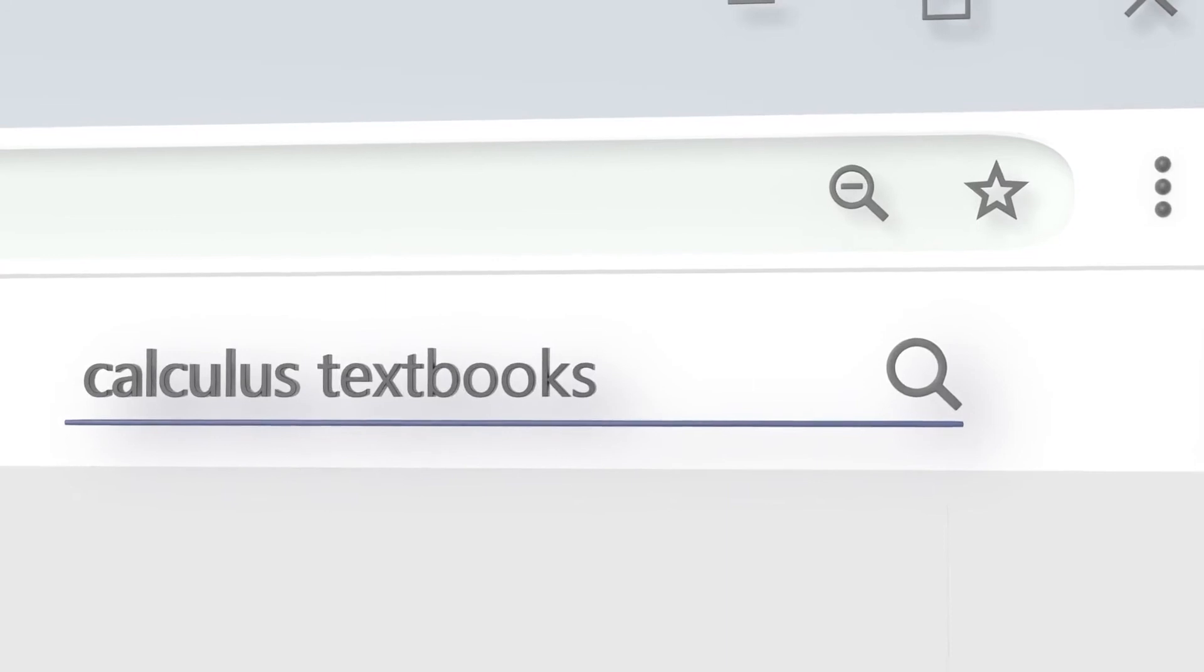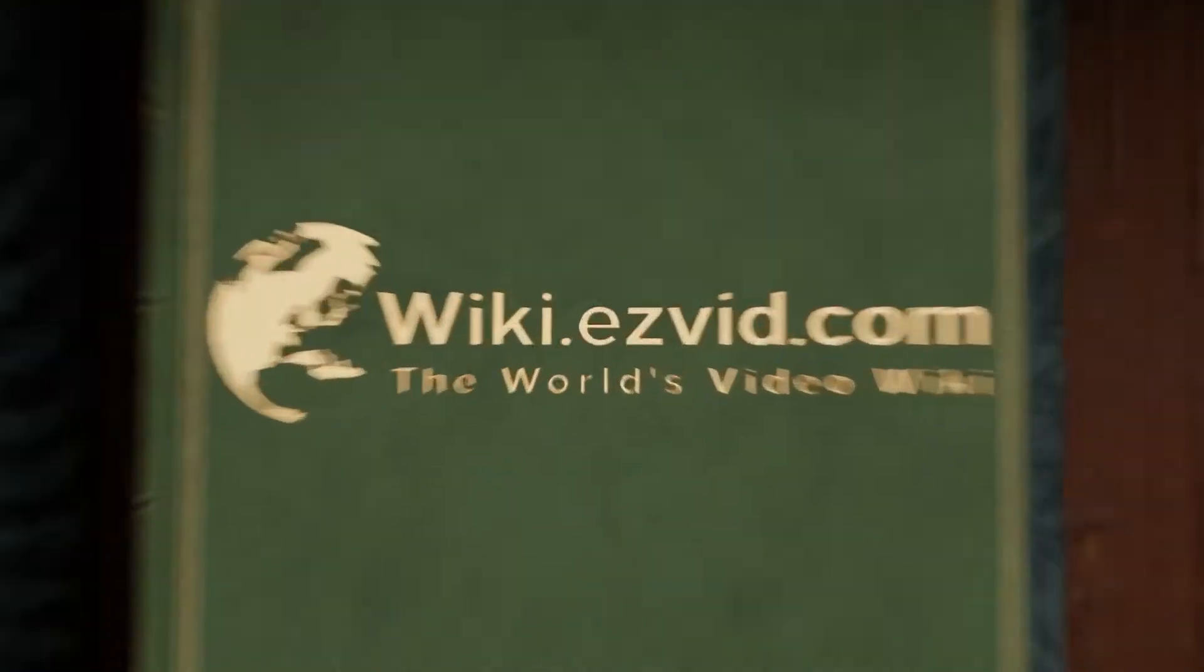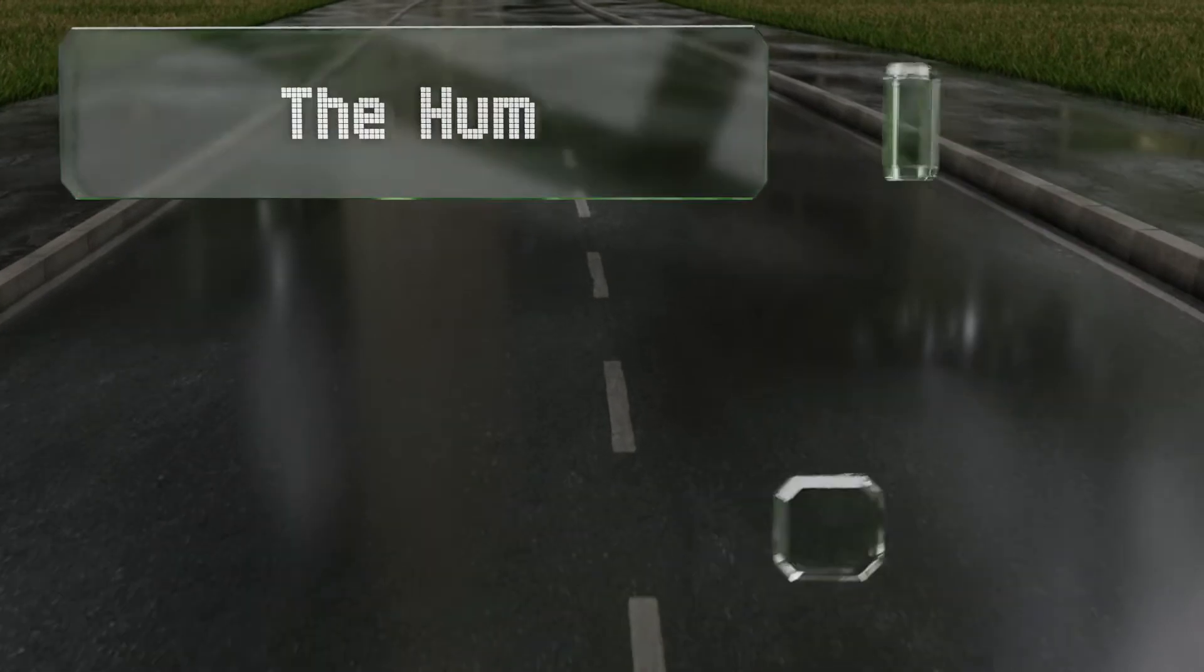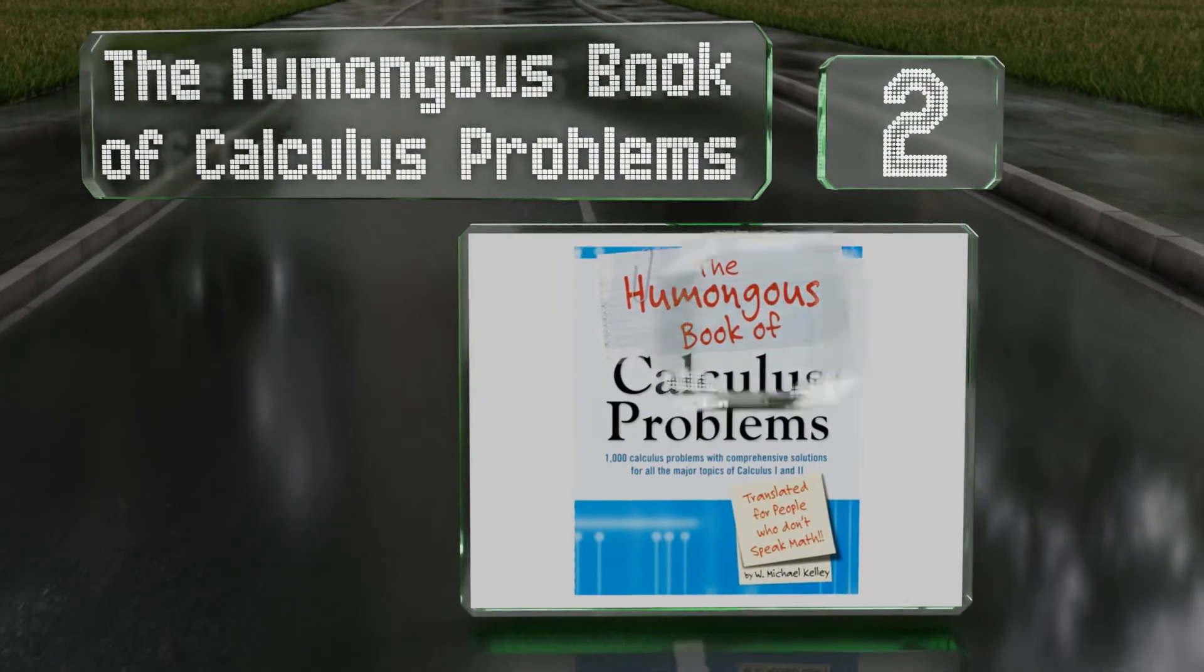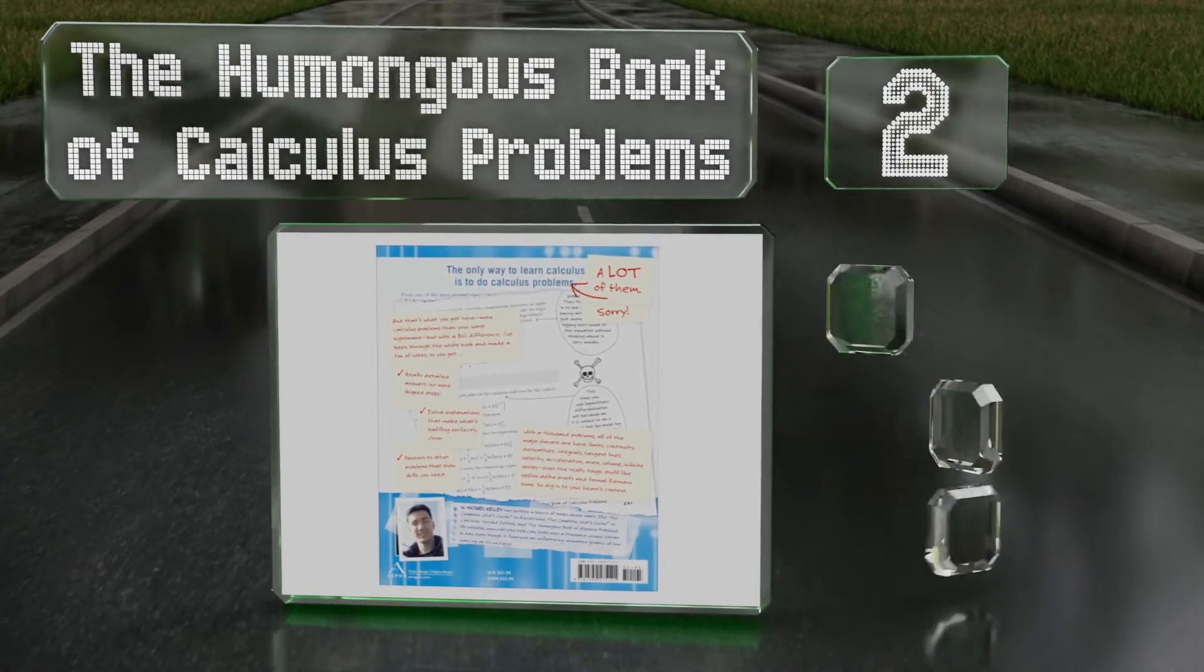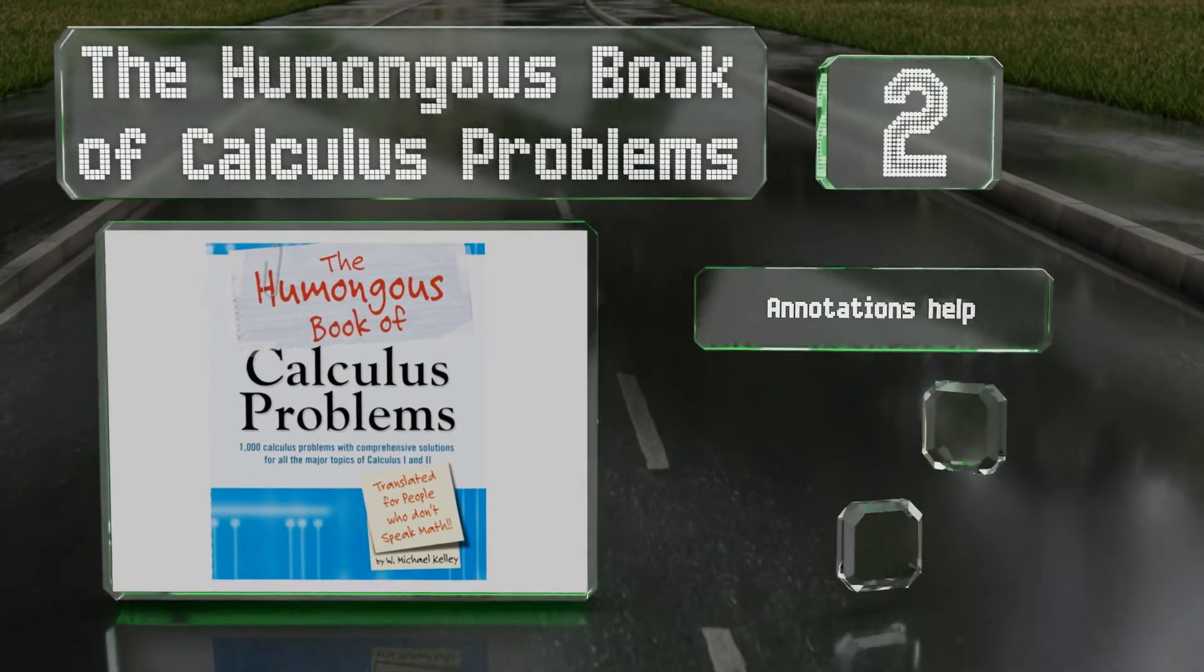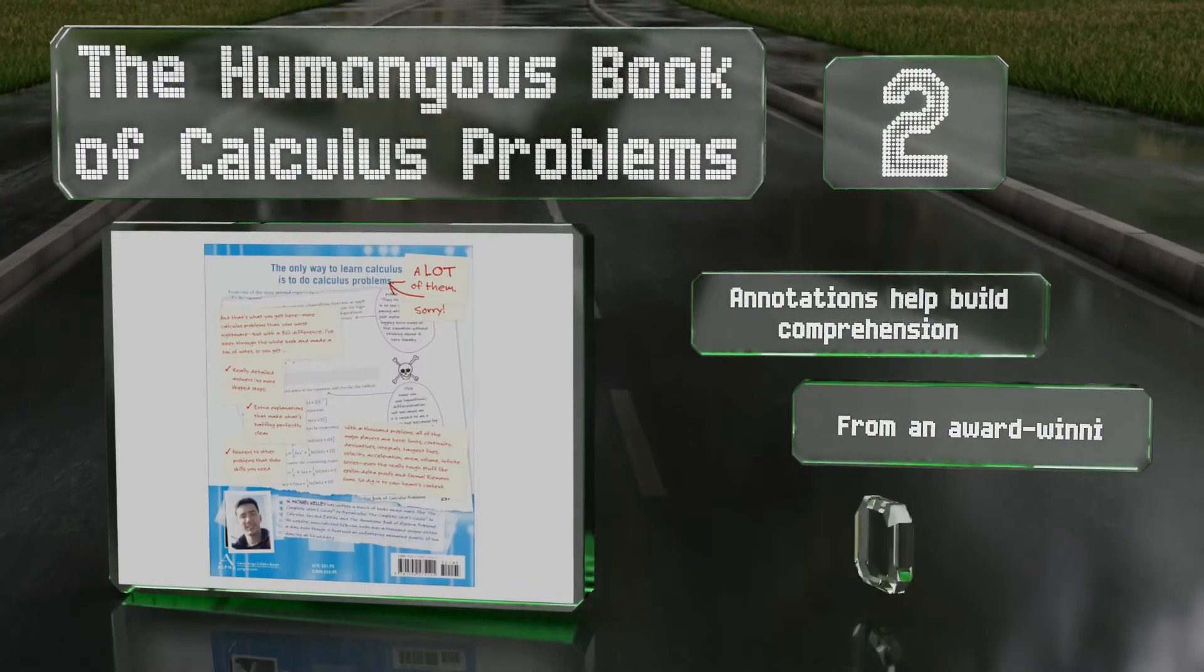At number two, The Humongous Book of Calculus Problems isn't a textbook per se, but it does make an excellent companion for those learners who want more practice than their school-issued volumes can give them. It's got over one thousand problems in it so you're sure not to finish it too quickly.